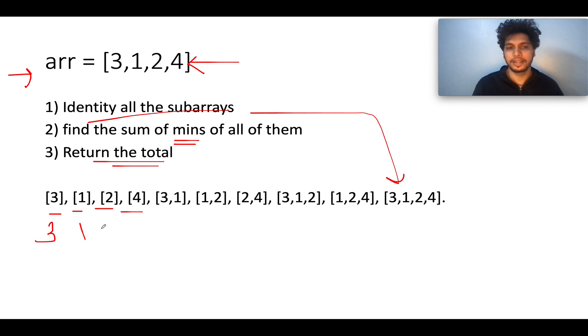Let's create all the subarrays that are possible. We identify the minimum across all these subarrays: the minimum would be 3 here, 1 here, 2 here, 4 here, the minimum would be 1 here, 1 here, 2 here, 1 here, 1 here, and 1 here.